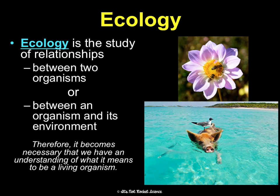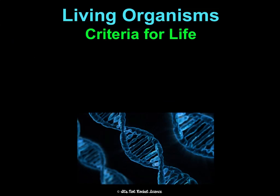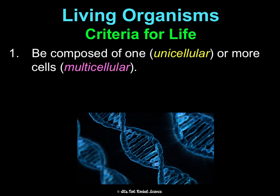An organism is a single living thing, so we need to understand what it means to be alive. There are six conditions, or criteria, that have to be met in order to be considered a living thing.